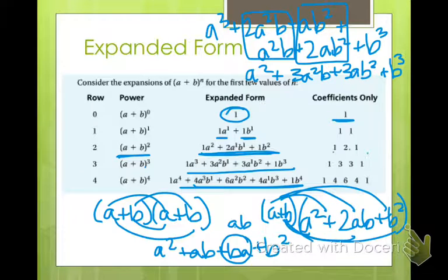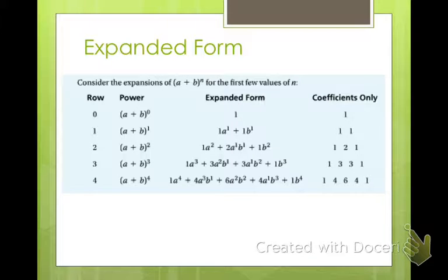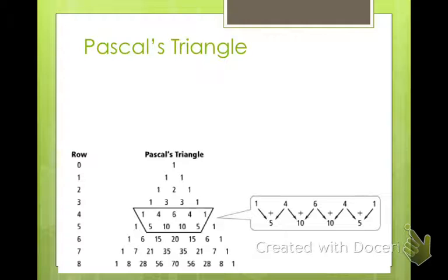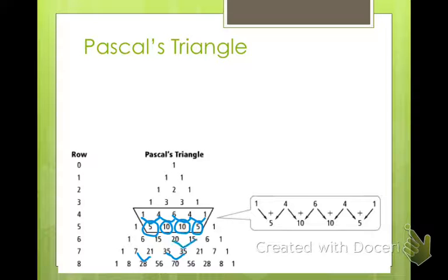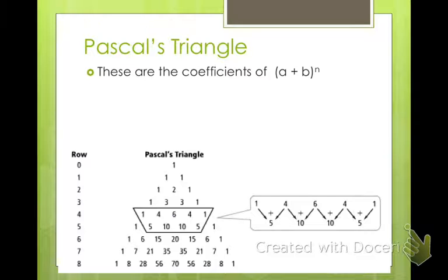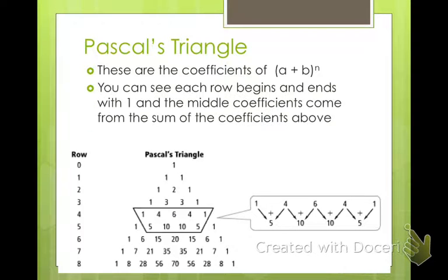That's what expanded form means — it just means to multiply everything out. In Pascal's triangle, he took all these coefficients and arranged them into a triangle. There are 1s all down the left side and 1s all down the right side. Then he filled in 2, 3, 3. Continuing: 4, 6, 4, then 5, 10, 10, 5. Each row is formed by adding the two coefficients above it — so 5 comes from 4 plus 1, 10 from 4 plus 6, 10 from 6 plus 4, and 5 from 4 plus 1. These are the coefficients of a plus b to the n power.